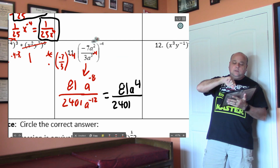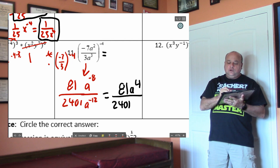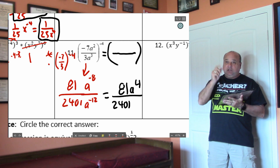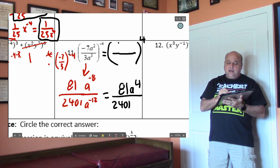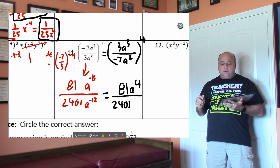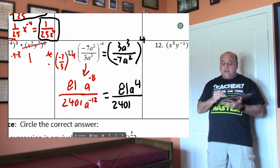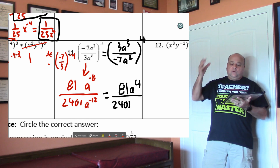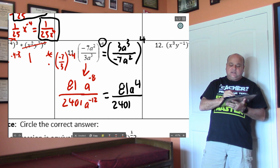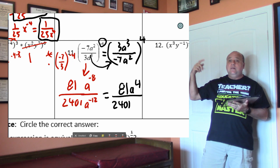Another way you could have done this: do you see that you had a negative exponent? I would suggest you write down the problem, change the exponent to positive, and then flip the fraction. This gives you the same answer — you got rid of the negative exponent. 3 to the 4th would be 81, the four negatives make a positive, 7 to the 4th is 2401, then you have a to the 12 over a to the 8, which ends up being a to the 4th. If you flip the fraction and make the outside exponent positive first, then do the math — it's a little simpler.